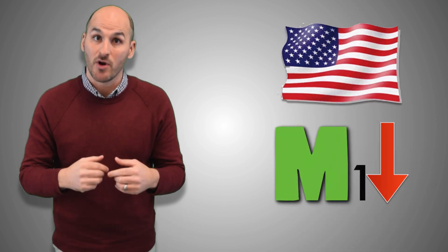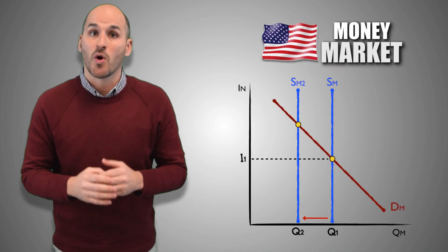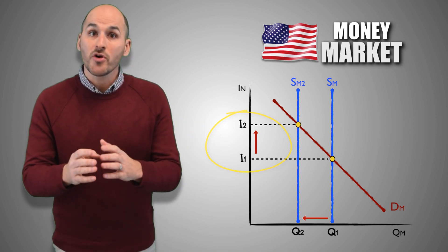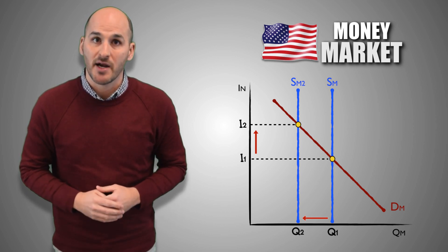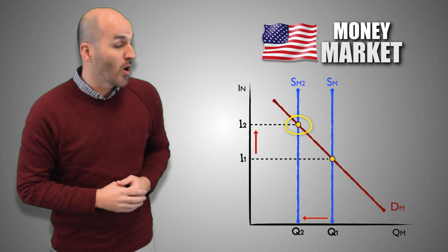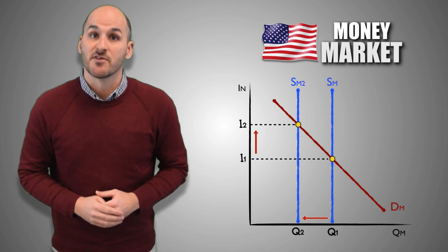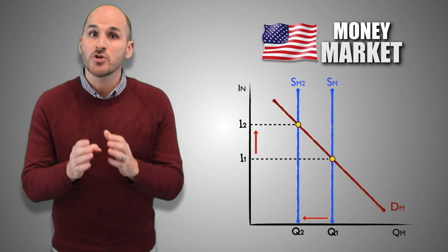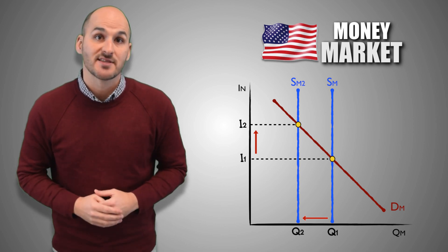Now suppose the Federal Reserve decides it's appropriate to take M1 funds out of the money market, causing the money supply to decrease. With lesser quantities of money available, the nominal interest rate will increase. In order to avoid the higher rates, consumers and borrowers demand less money, establishing a new equilibrium. This higher nominal interest rate means borrowing is more expensive, so firms reduce their investment spending, causing aggregate demand to decrease.